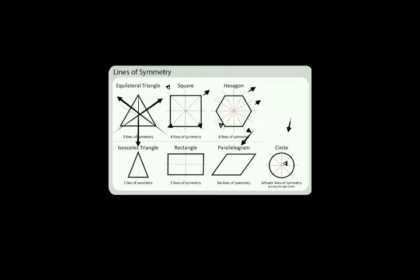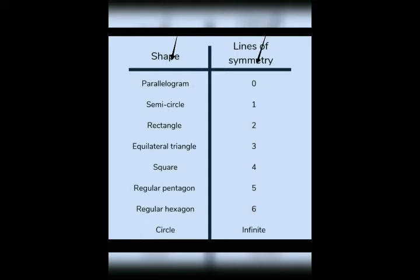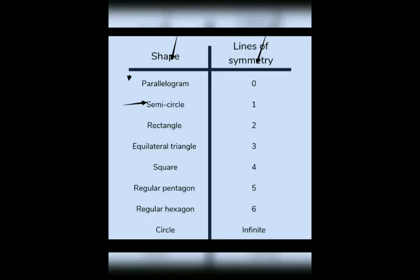Here is a chart of shapes and their lines of symmetry: a parallelogram has zero lines; a semicircle has one vertical line of symmetry; a rectangle has two lines of symmetry; an equilateral triangle has three lines; a square has four lines of symmetry; a regular pentagon has five lines of symmetry; a regular hexagon has six lines of symmetry.